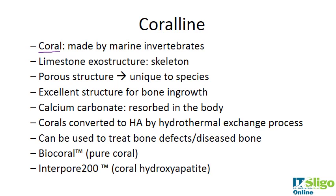Coralline is made by marine invertebrates. It has a limestone exoskeleton, is very porous, and the pores are unique to each species of coral, making it an excellent structure for bone ingrowth. It is comprised mainly of calcium carbonate, which is resorbed in the body. Corals taken from the seabed can be converted to hydroxyapatite by a hydrothermal exchange process, and the resulting bone graft is used to treat defects or diseased bone.